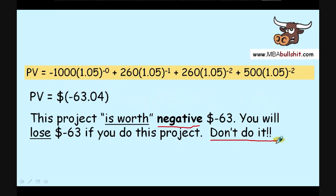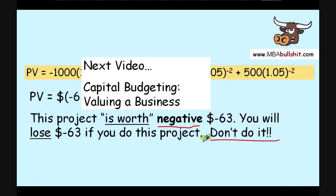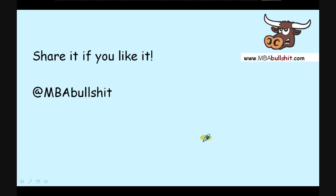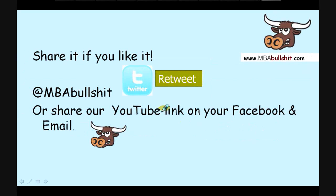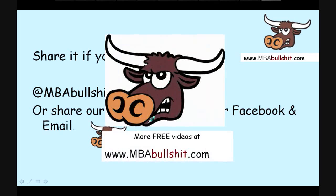This means the project is worth negative $63 — you will lose $63 if you proceed. Therefore, don't do it. However, if the result had been a positive number, that would mean you'd earn money, and you should do the project. In our case it's negative, so don't do it. Now you understand the basic concept and can move on to the next video on capital budgeting: valuing a business. Remember to share it if you like it — on Twitter we're MBAbullshit, or share the YouTube link on Facebook or by email. Goodbye and have a great day.